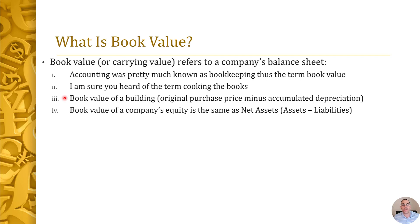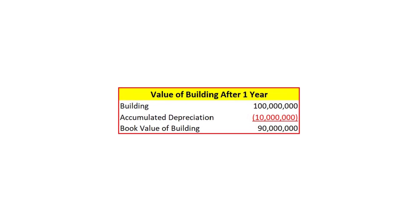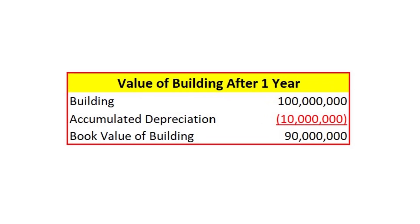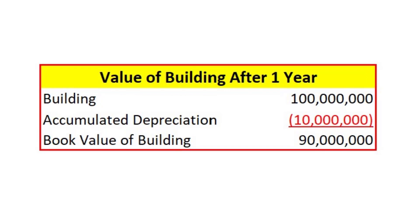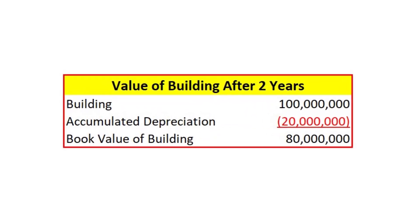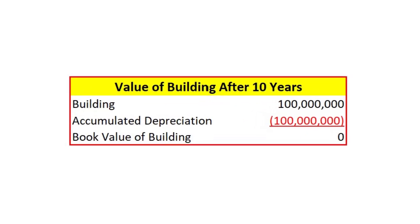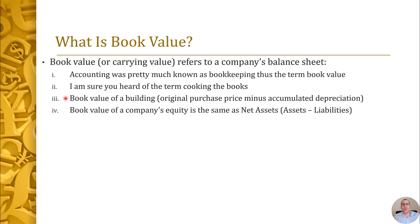When someone says book value they may be referring to one particular asset on the balance sheet. For example, the book value of a building is the original purchase price minus accumulated depreciation. Say a company bought a building for $100 million — that goes on the balance sheet as the book value. Each year they depreciate the asset onto the income statement, say over 10 years at $10 million per year. After 12 months the book value is $90 million; after two years, $80 million; after 10 years, the book value is zero — though they can still use the building for many more years.